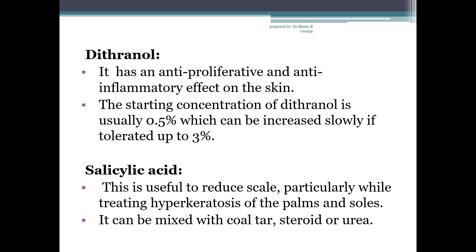Next is dithranol, which has anti-proliferative and anti-inflammatory effects on the skin. It is one of the oldest treatments used for stable chronic plaque psoriasis. The starting concentration is usually 0.5%, which can be increased slowly up to 3% if tolerated. Practical drawbacks include burning and irritation of normal skin, staining of clothes, and strong odour. Salicylic acid is also useful to reduce scale, particularly for treating hyperkeratosis of the palms and soles, and can be mixed with coal tar, steroid or urea.